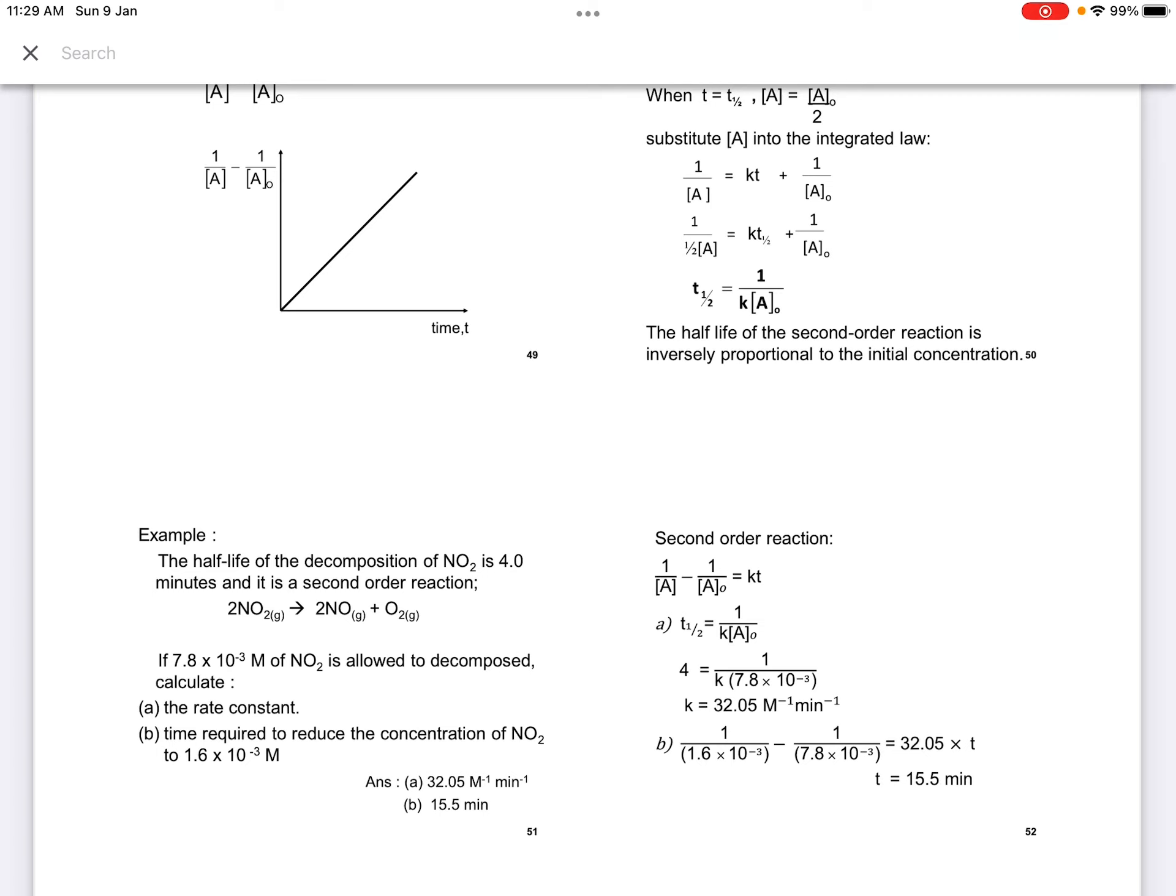For half-life, we have seen the formula: T-half equals to 1 over K A0. Half-life is given as 4 minutes in the question. 1 over K A0, A0 is given as 7.8 times 10 to the power minus 3. So we can find the K. In this case, the K is 32.05 per molar per minute, because we use the half-life in minutes.